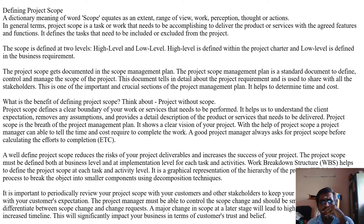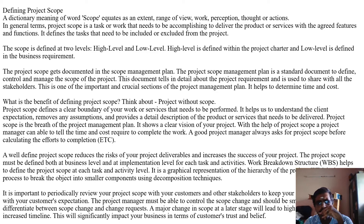The scope is defined at two levels: first, high level, and second, low level. High level is defined within the project charter, and low level is defined in the business requirement. The project scope gets documented in the scope management plan, which is a standard document to define, control, and manage the scope of the project.